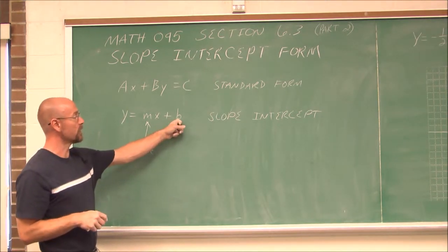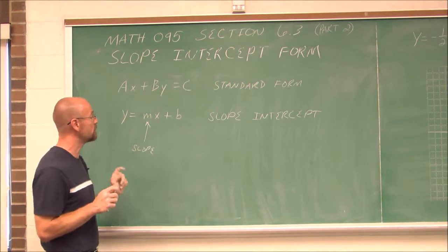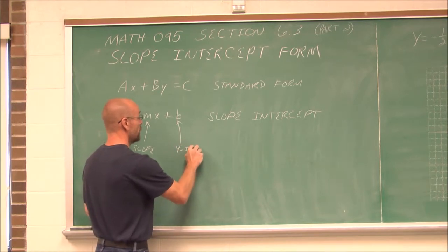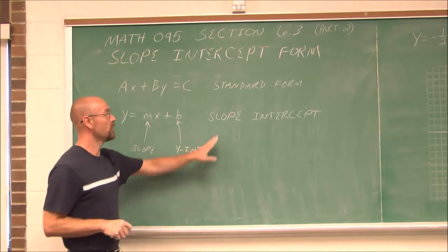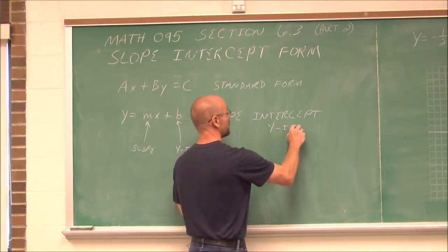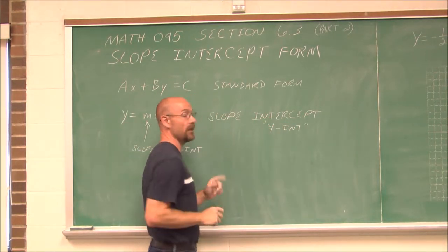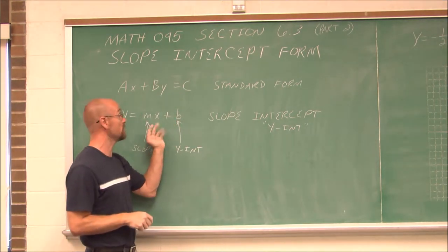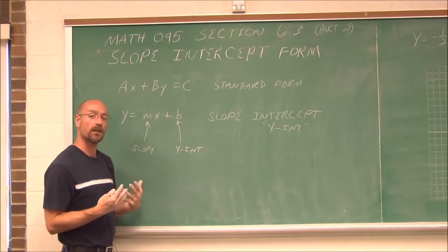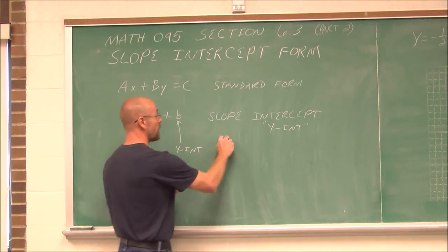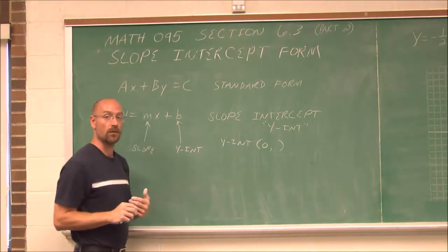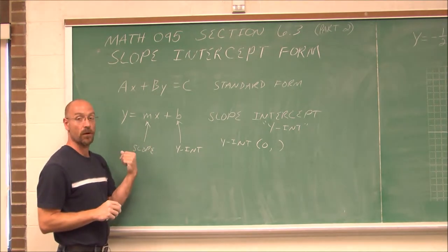The b value denotes the y-intercept. So when we say slope-intercept, we're specifically talking about the y-intercept, not just any intercept. Slope-intercept form tells us both the slope and the y-intercept. To find a y-intercept, x is always 0. If I plug 0 into this equation, 0 times anything is 0, so y equals b.